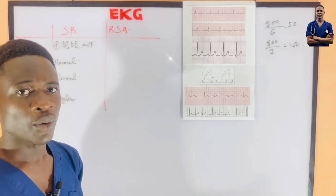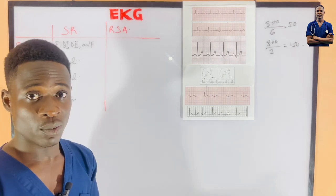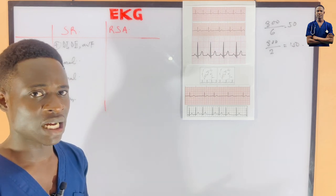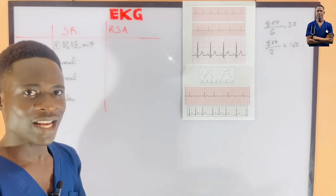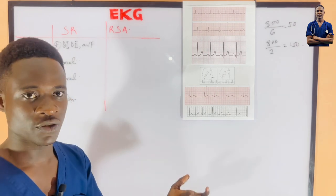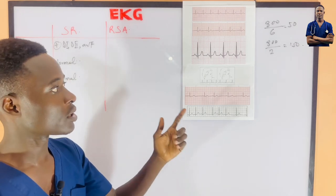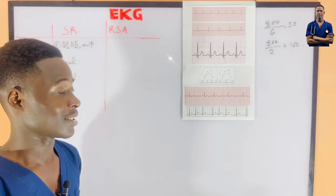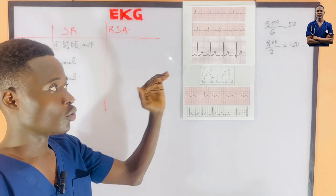For tachycardia, certain drugs like adrenaline and salbutamol increase the heart rate. Heat increases the heart rate as well. Exercise and anxiety also contribute to the increment of heart rate. So when a person has sinus tachycardia, you must think of these factors; and when a person has sinus bradycardia, you must think of the causes already mentioned.